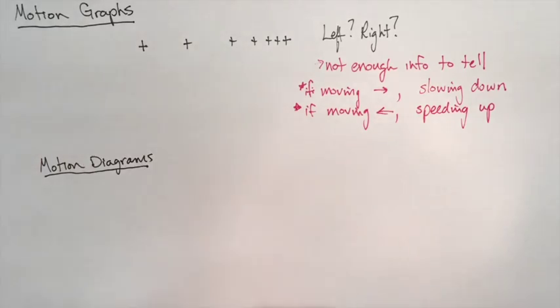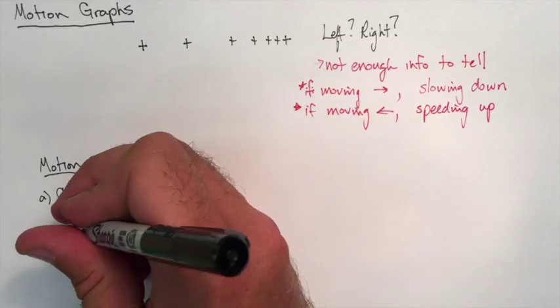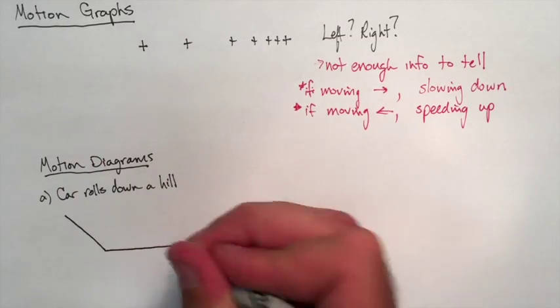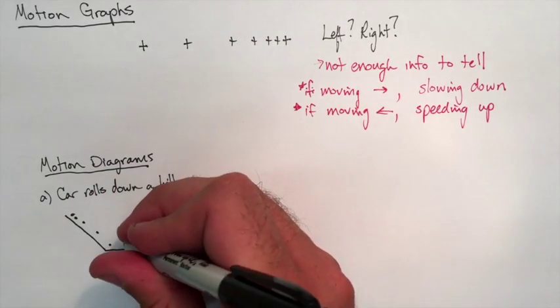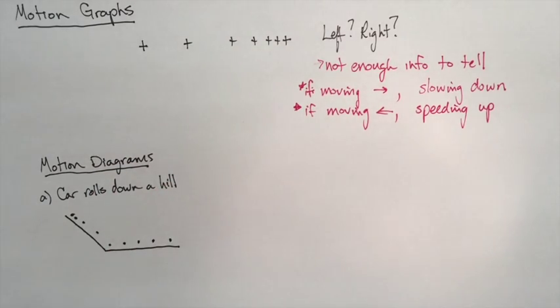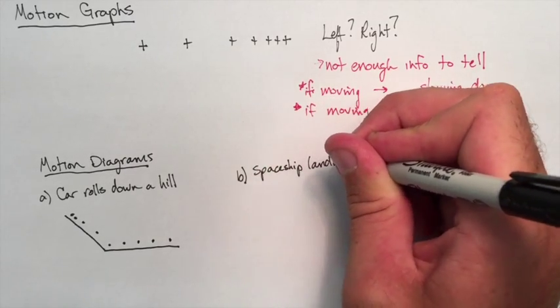Finally, using motion diagrams, we can illustrate different types of motion. The first one, let's say a car is rolling down a hill. So the car starts pretty slow, but as it goes down it speeds up so the dots get further apart. And when it gets to the flat section, it's at constant velocity so the dots are equally spaced.